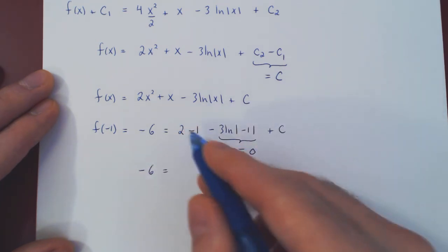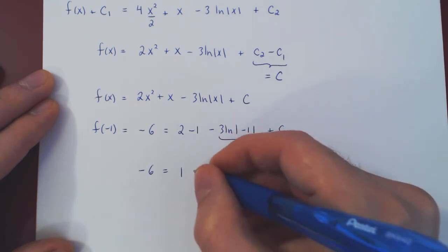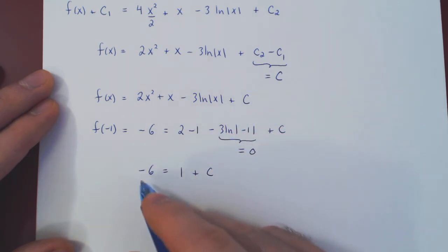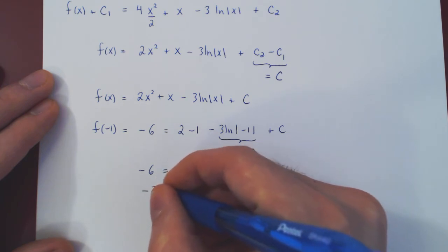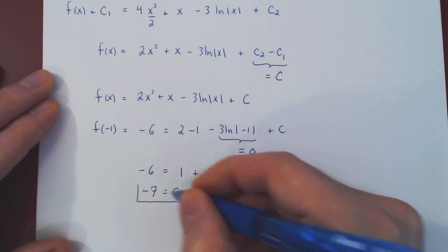So the equation becomes -6 equals 2 minus 1, which is 1, plus c. Subtract 1 on both sides, and you get that -7 is equal to c. And now we have solved for the arbitrary constant.